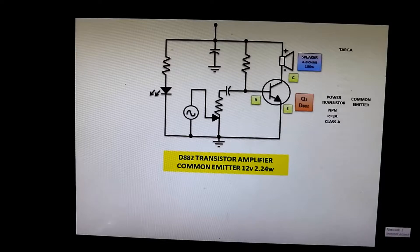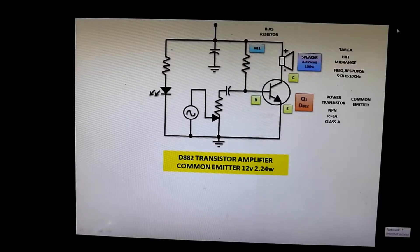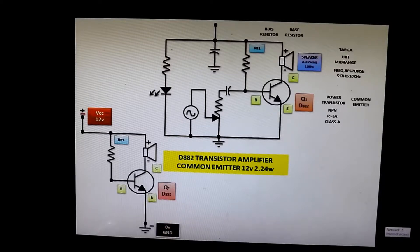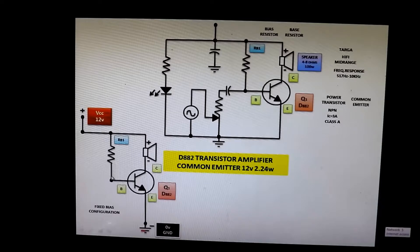We have a speaker of 4 to 8 ohms, 100 watts — I'm using a Targa hi-fi mid-range with a frequency response of 517 Hz to 10 kHz. RB1 is called the bias resistor, sometimes called the base resistor. Current flows into the base, making the transistor forward biased and turning it on — that's why it is called a fixed bias configuration, because the resistor is connected between the voltage supply and the base of the transistor.